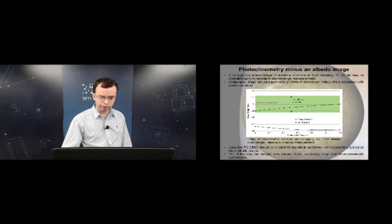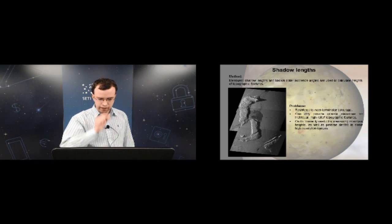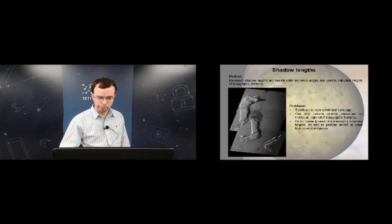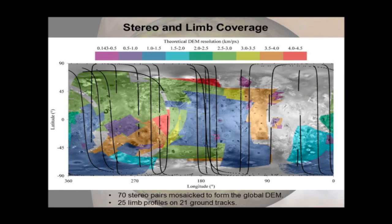Once a photoclinometry DEM is made, if a coincident stereo DEM is available, the two can be merged to combine long and short wavelength components — giving the best of both worlds. Shadow lengths are also intermittently useful on IO, restricted to near-terminator coverage where long shadows are cast. They can only provide relative elevations for individual high-relief features, generally mountains, and in some high-resolution images can also provide Pateri depth measurements.